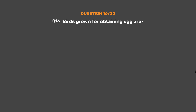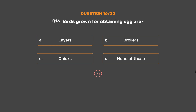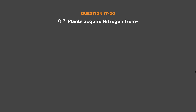Question No. 16. Birds grown for obtaining eggs are — Option A: Layers. Option B: Broilers. Option C: Chicks. Option D: None of these. The correct answer is Option A: Layers.